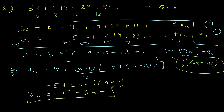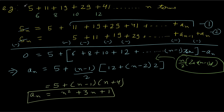So A_N equals N squared plus 3N plus 1. But what was our initial aim? Our aim was to find the sum of this series up to N terms. What we did instead was find the expression for the general term. To check if this is indeed the general term: substituting N equals 1 gives 1 plus 3 plus 1, which is 5. Substituting N equals 2 gives 4 plus 6 plus 1, which is 11. So yes, this is the general term for this series.